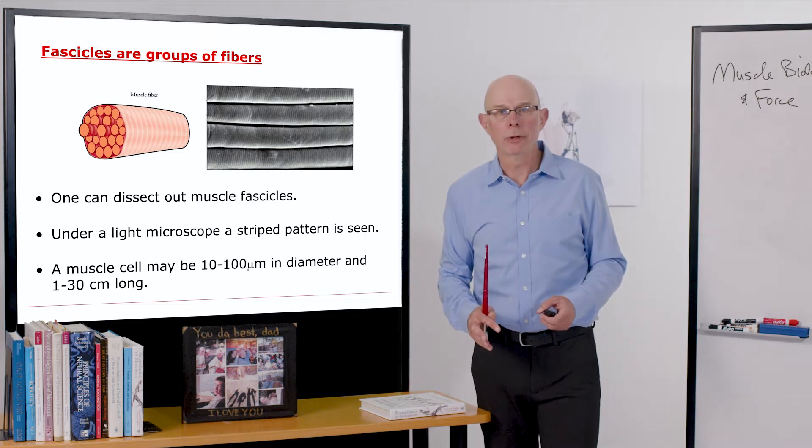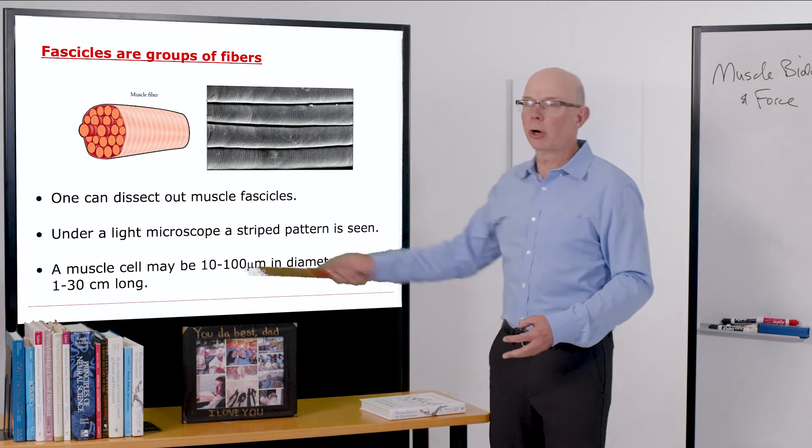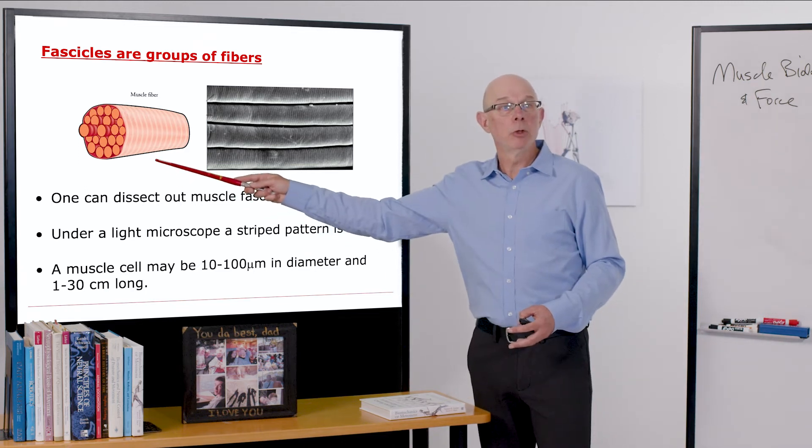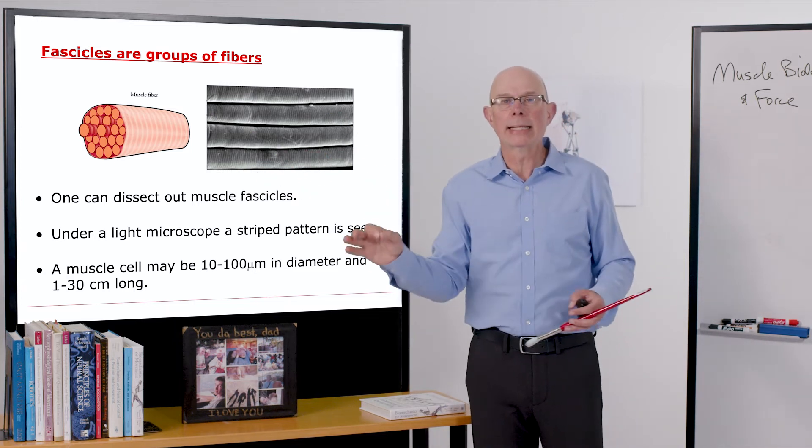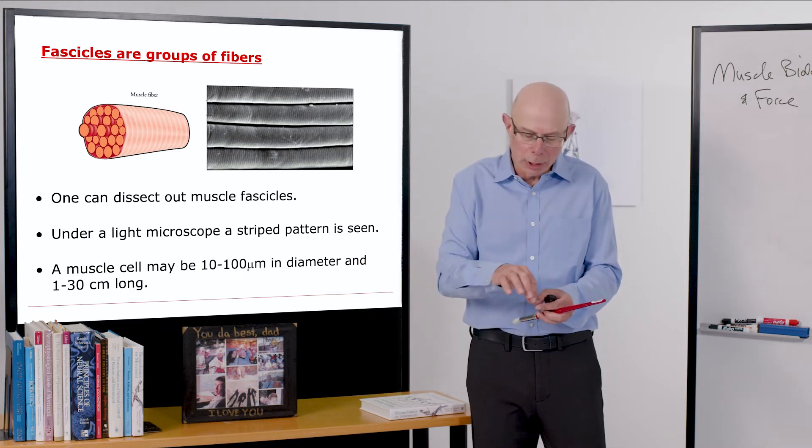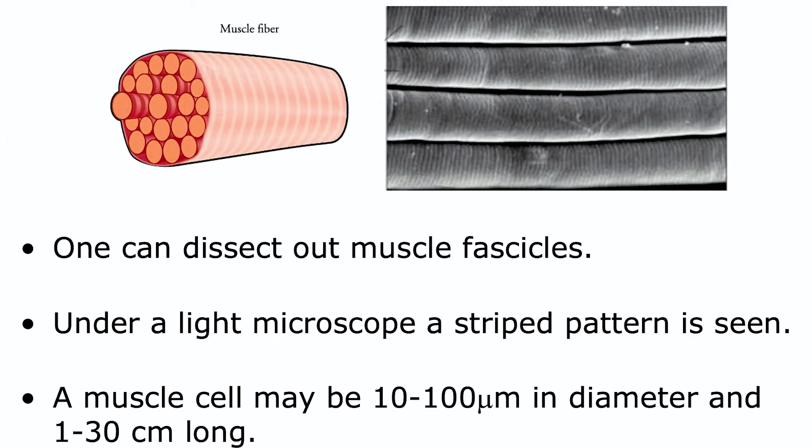We'll start in the middle with a fascicle. So a muscle fascicle is a group of muscle cells. If you look under a microscope, you can actually see these muscle fascicles. And if you're dissecting a muscle, you can dissect out the fascicles. If you take little tweezers in a muscle, you can peel that out and you'll get a fascicle. If you put that under a light microscope, you can see the striped pattern that gives striated muscle its name. Now a muscle cell can be anywhere from 10 to 100 microns in diameter and 1 to 30 centimeters long. So they're very specialized cells.